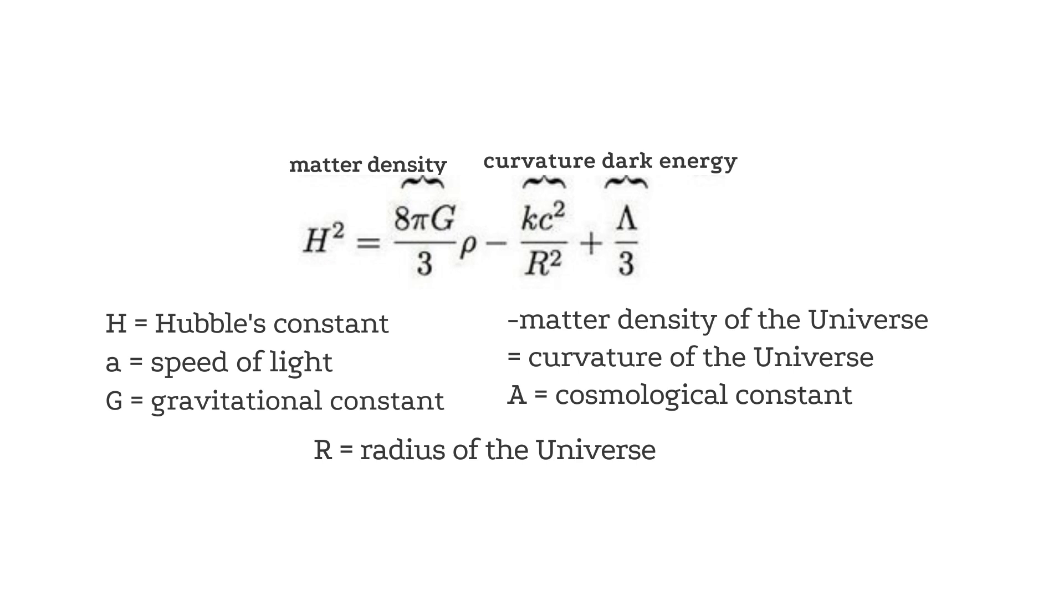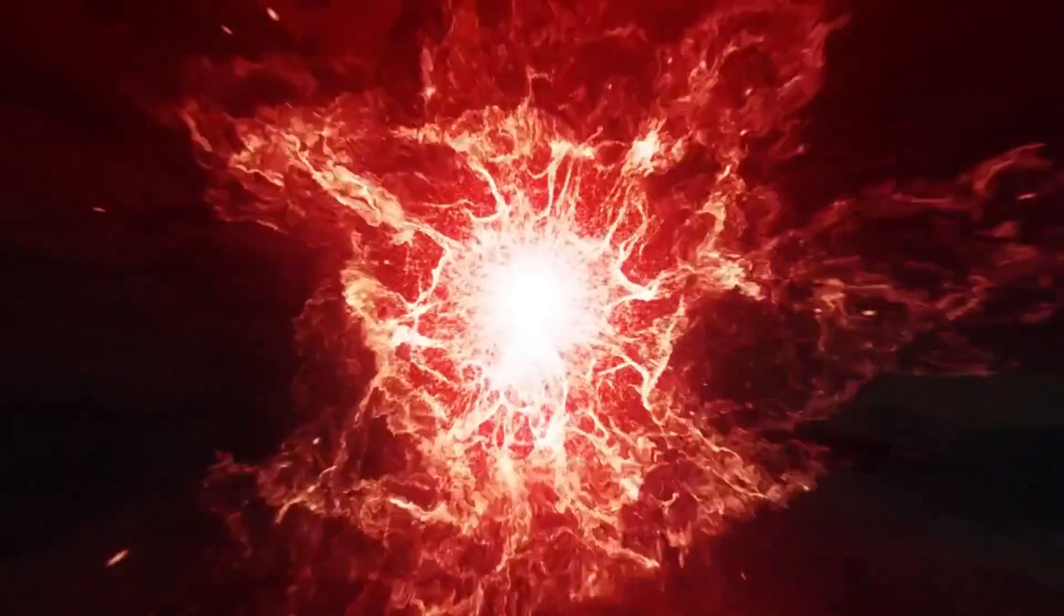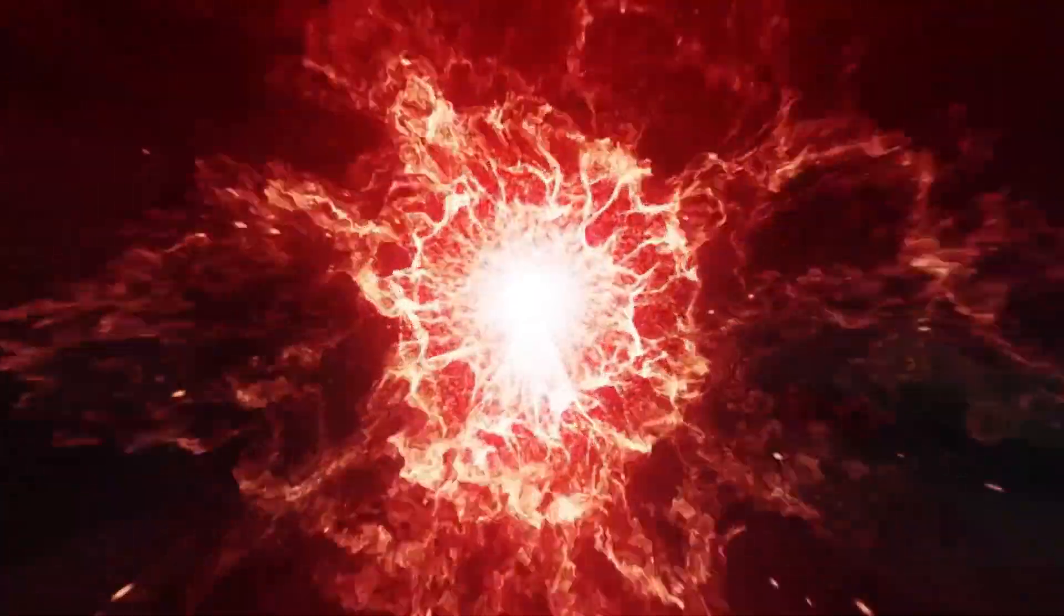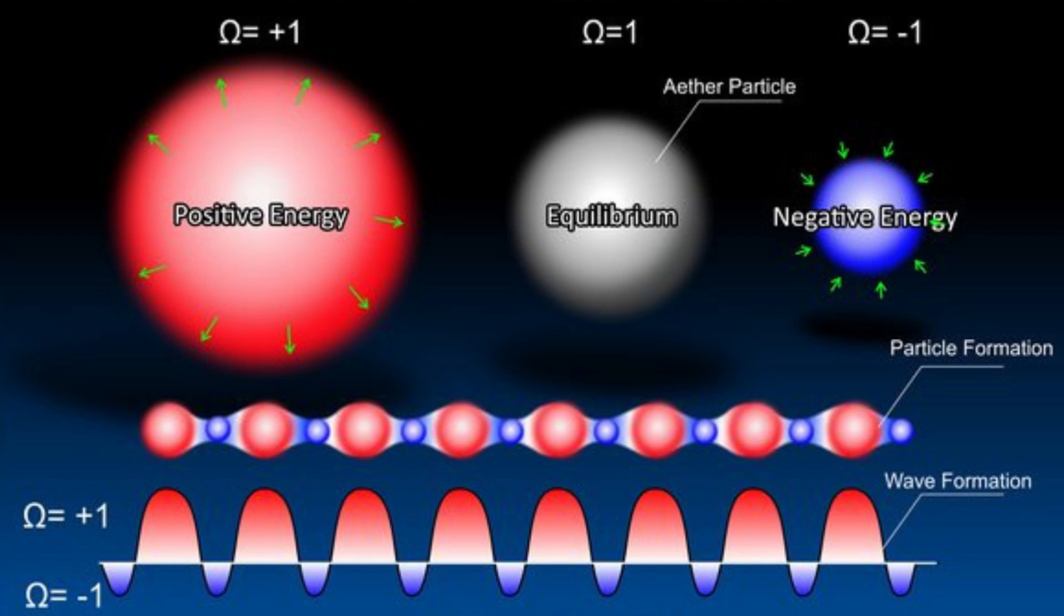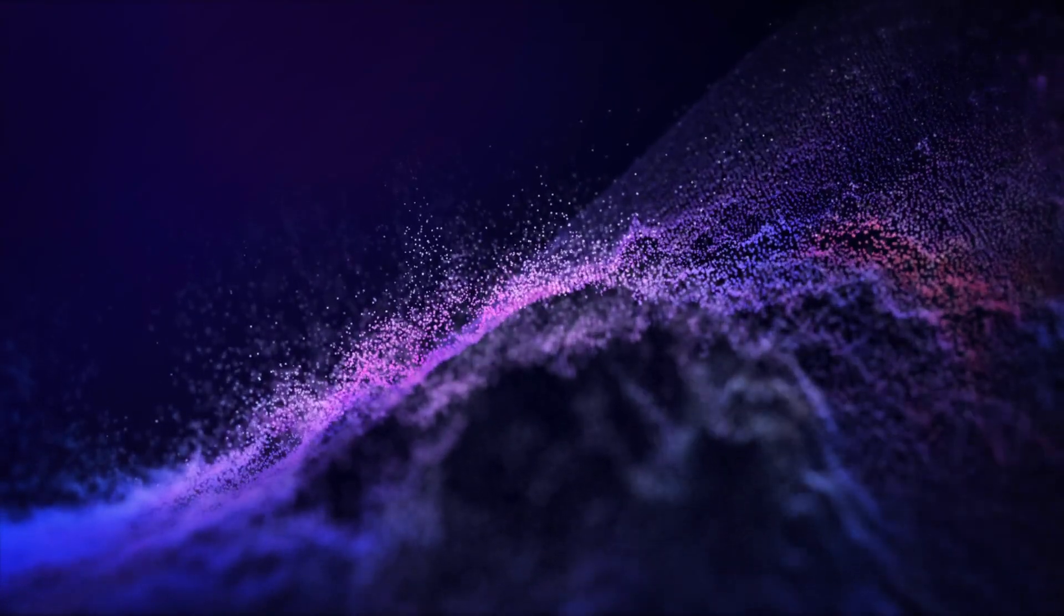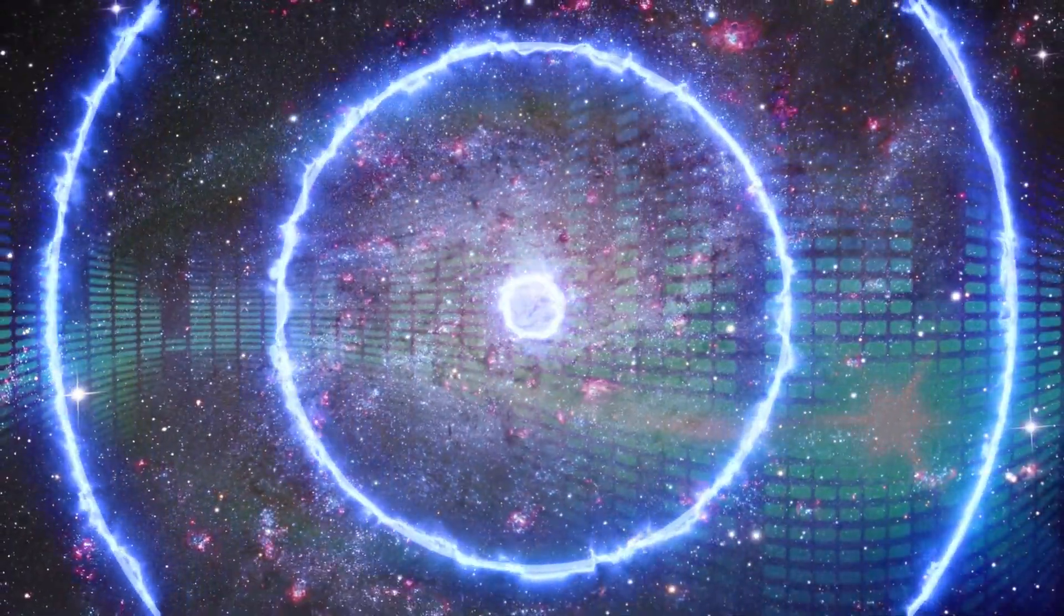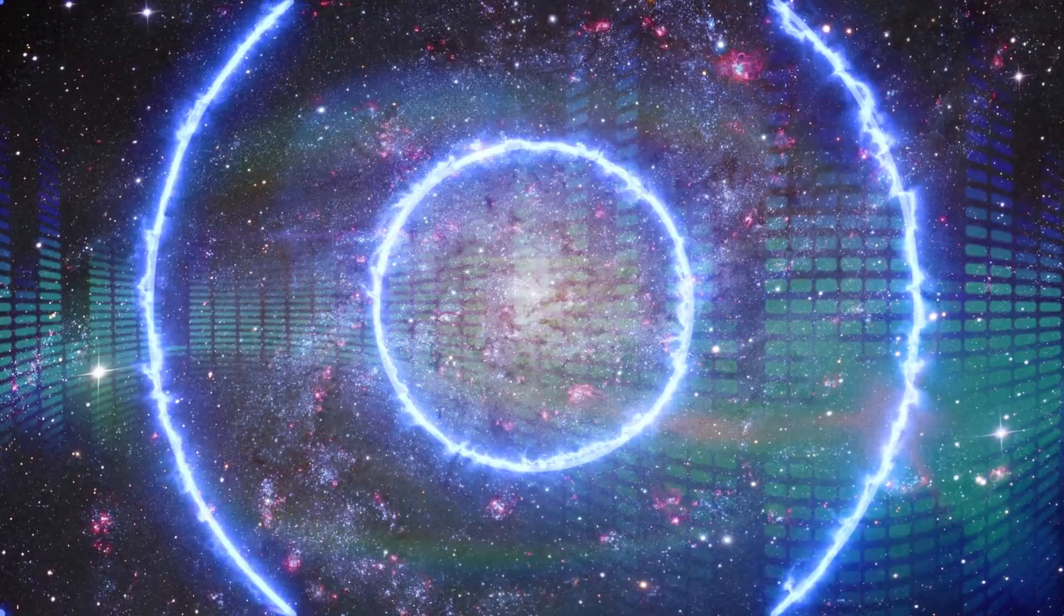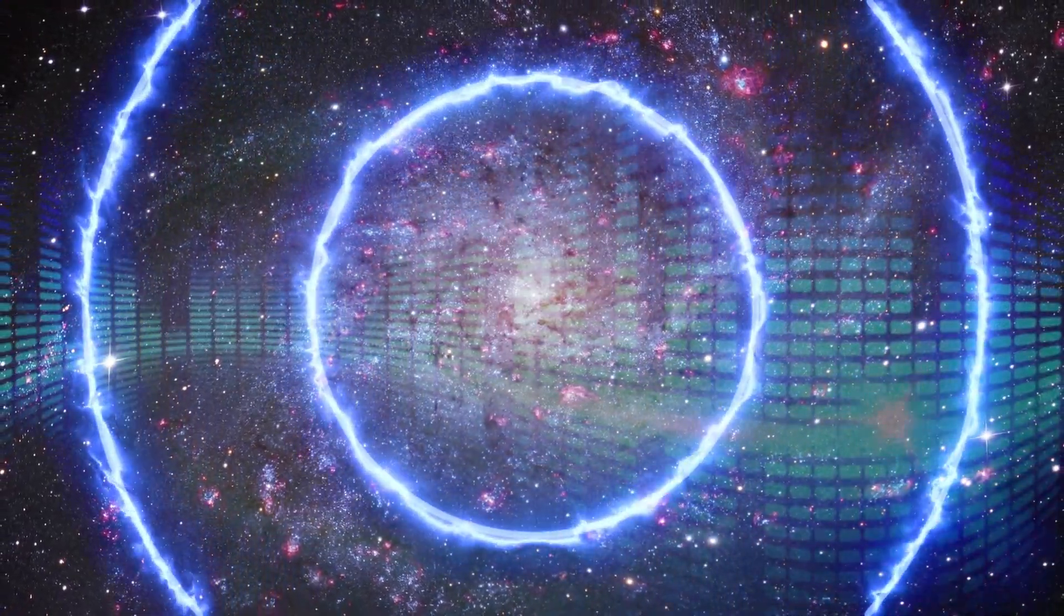However conceivably, if you were somehow to set the values of this equation so that pressure was negative and greater than the positive energy density, that minus sign would cause the whole thing to flip and you would accelerate the stretching of space. In effect, you would end up with a volume of space filled with a kind of anti-gravity, a dark energy.